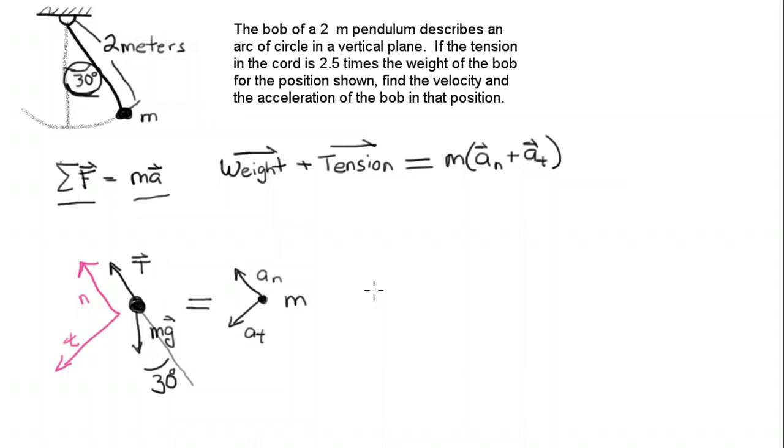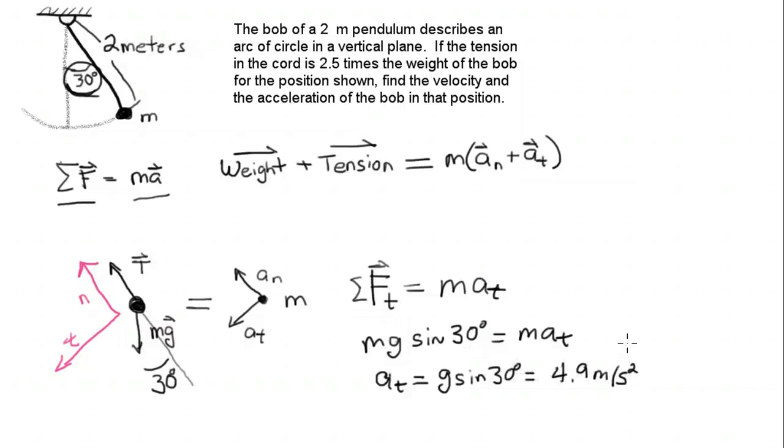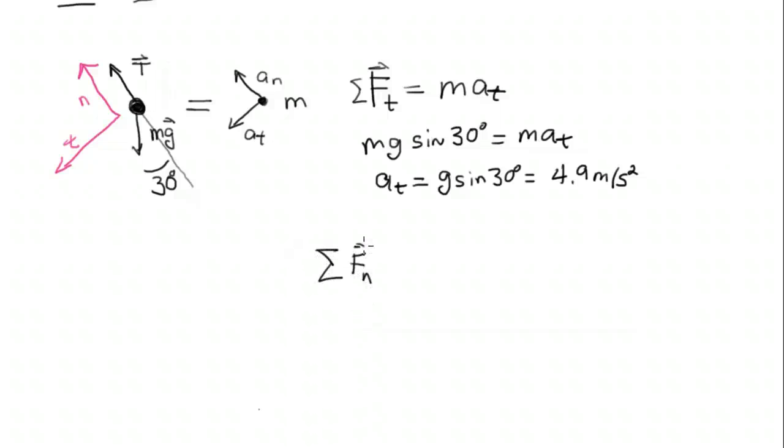So we have the force in the tangential direction. The sum of all those forces is equal to the mass times the acceleration in the tangential direction. And I'm going to start speeding through this. So first write down the component, the tangential component due to gravity. It's mg sine 30. Then we can solve for the tangential component of the acceleration. There it is, 4.9 meters per second.